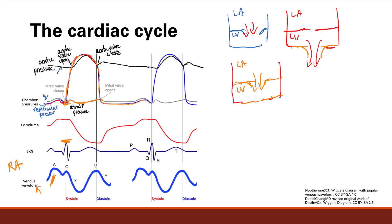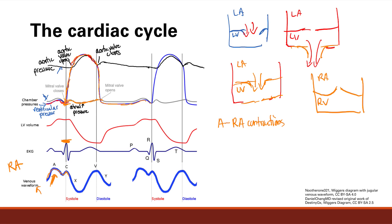We're at the end of diastole and we see a little bump: the A wave is right atrial contraction. The right atrium is going to contract to push that last bit of blood into the right ventricle. Then the right ventricular pressure will exceed the right atrial pressure — now we're looking at the right side of the heart — so the tricuspid valve closes and bulges into the right atrium a little bit. That C wave is the bulge of the tricuspid valve.